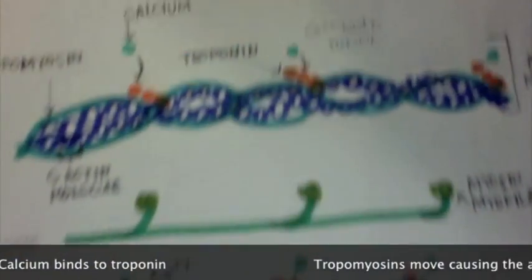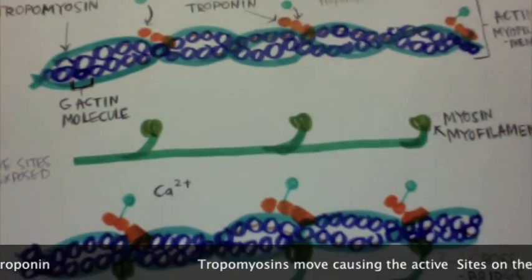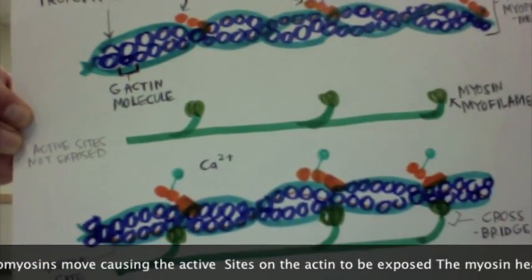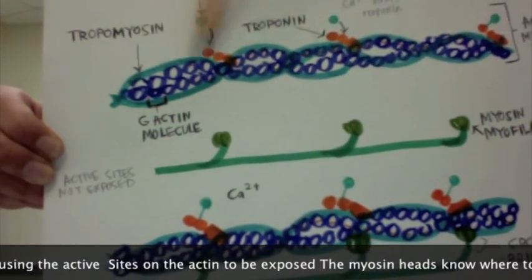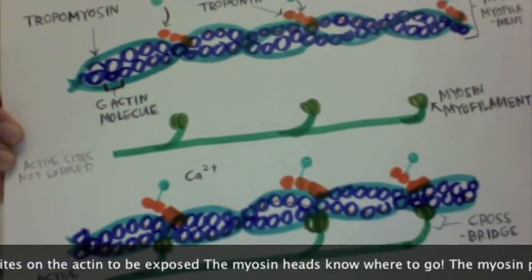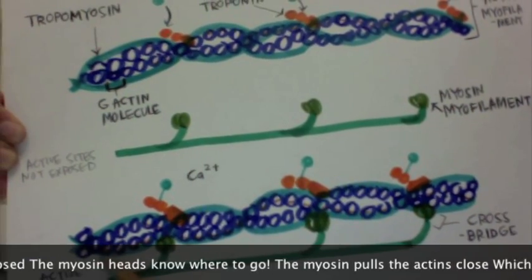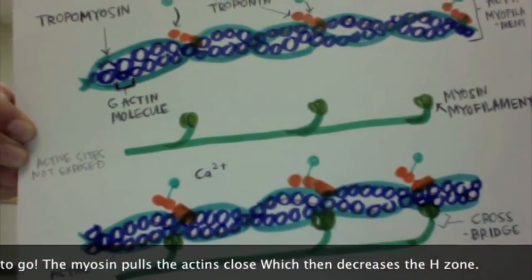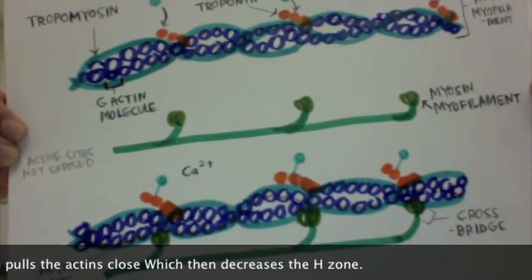Calcium binds to troponin. Tropomyosin moves, causing active sites on actin to be exposed. The myosin then pulls the actin close, which decreases the H-zone.